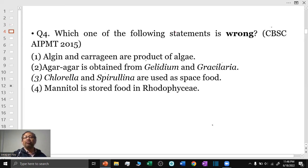Question 4: Which one of the following statements is wrong? Algin and carrageenan are products of algae. This is a correct statement. Agar-agar is obtained from Gelidium and Gracilaria.